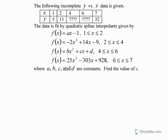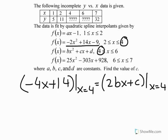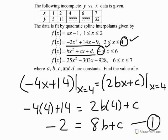What that gives us is that minus 4x plus 14, that is the derivative of the second spline at x equal to four, will be same as the derivative of the third spline, which is 2bx plus c. Keep in mind that the two splines are same at the common point which is x equal to four. So from here we get minus 4 times 4 plus 14 is equal to 2b times 4 plus c, which gives you minus 2 is equal to 8b plus c. So that's my first equation. I still have to find another equation to find the value of c.